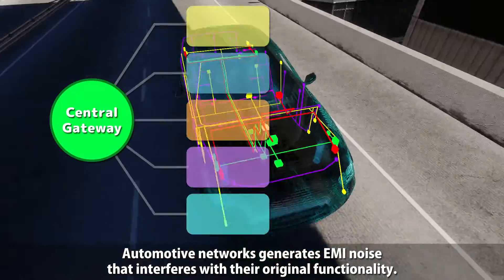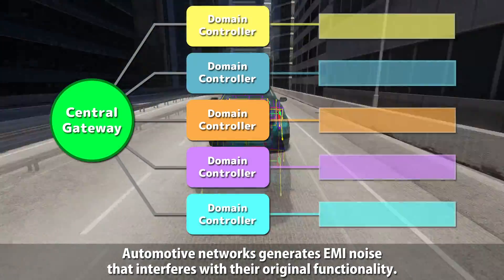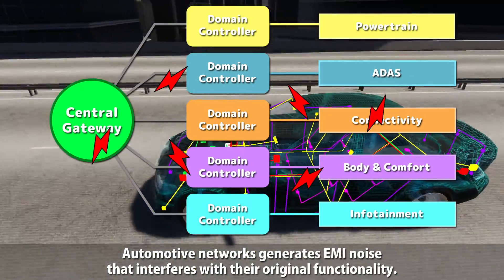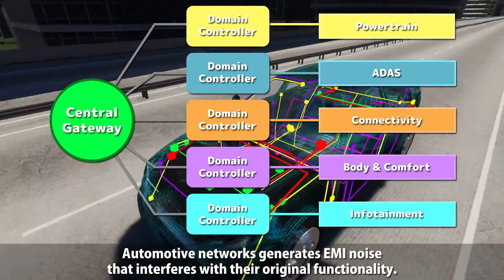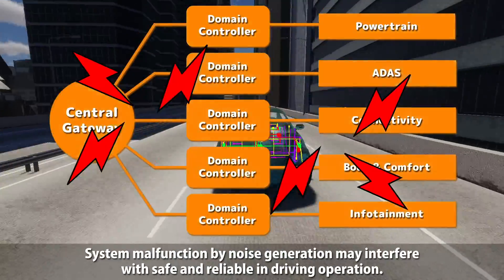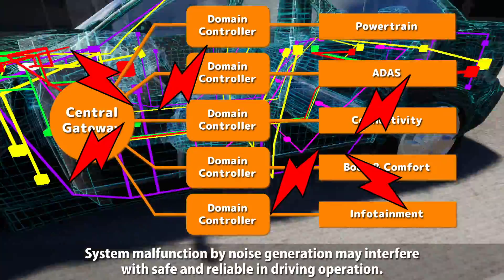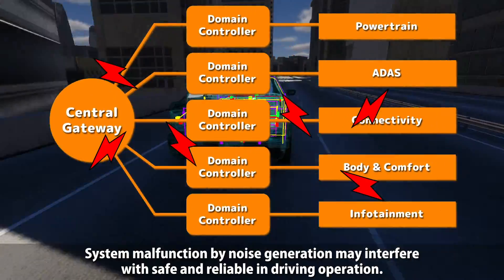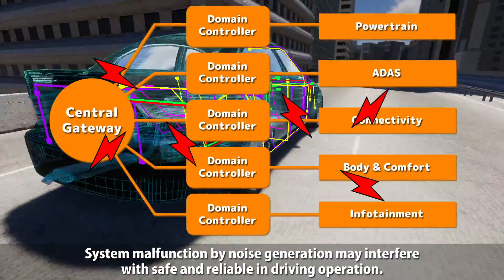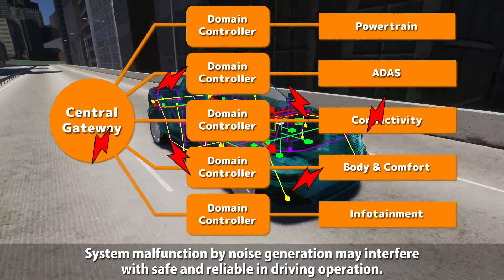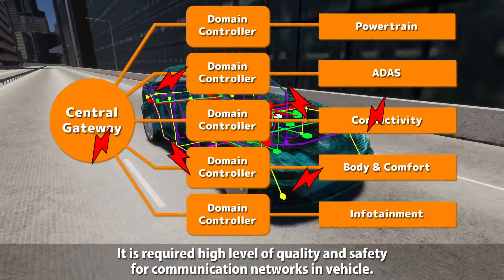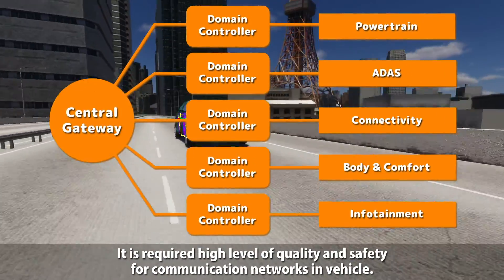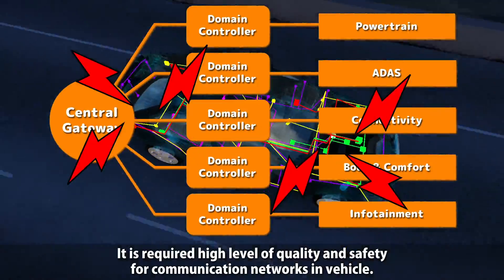Automotive networks generate EMI noise that interferes with their original functionality. System malfunction by noise generation may interfere with safe and reliable driving operation. It is required to have a high level of quality and safety for communication networks in vehicles.